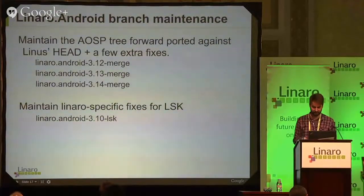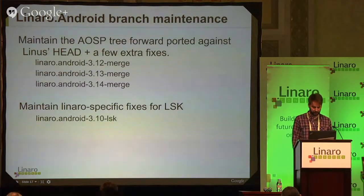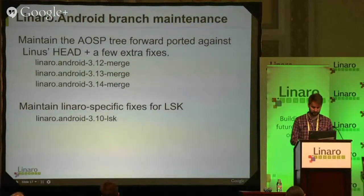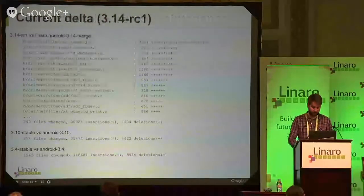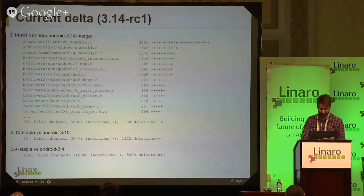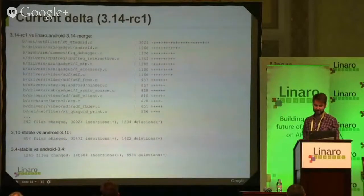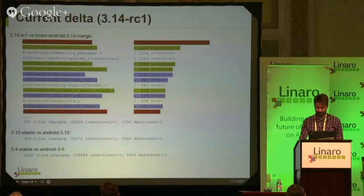We keep track of the Linaro Android branch, which is basically merging the AOSP tree forward ported against Linus's head, and it includes a few small fixes. We've done it for basically each kernel release for each of the monthly Linux Linaro releases, as well as the LSK tree. As far as the current delta, I basically did a diff stat against 3.14, against the Linaro Android 3.14 merge, and sorted by the largest deltas, color coded for reference.